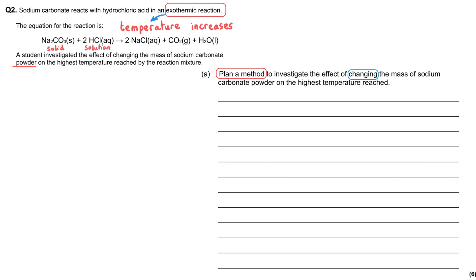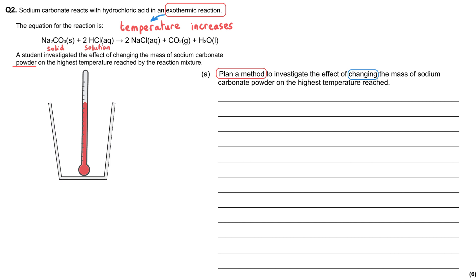To get those marks, we need to be clear about what the experiment is asking us to plan. The starting point is to unpick key information. We're told it's an exothermic reaction, so the temperature will increase, and we're likely doing an experiment that measures that temperature increase — thinking of a chemical reaction inside a polystyrene cup with a thermometer to measure the temperature change.